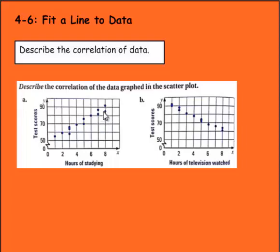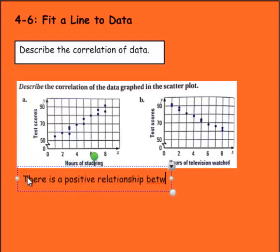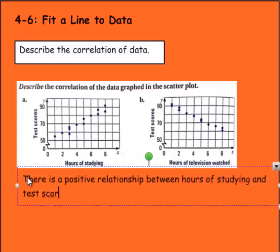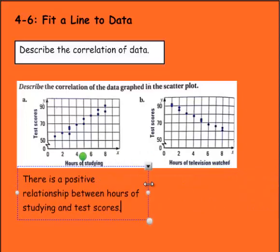This would make sense. If you study for six hours or eight hours, those people are scoring higher than those who only studied two hours or four hours. So we see a relationship here. We're going to say there is a positive relationship between hours of studying and test scores. The more you study, the higher your test scores are going to be. It's going up. If you were drawing a line, it would be a positive slope.